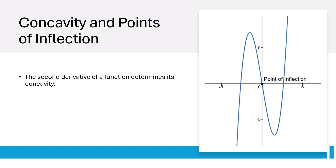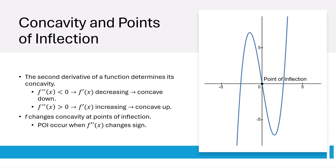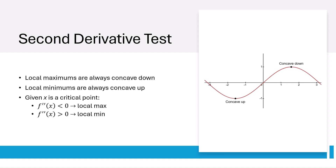The second derivative of a function determines its concavity. When the second derivative is negative, f prime of x is decreasing and the function is concave down. When the second derivative is positive, the first derivative is increasing and the function is concave up. When f changes concavity, or when the second derivative changes signs, we have a point of inflection. The second derivative test is another way to classify critical points. Whenever we have a local maximum, the graph is concave down; whenever we have a local minimum, the graph is concave up. So given x, a critical point: if the second derivative is less than 0, we have a local max, and if the second derivative is greater than 0, we have a local min.